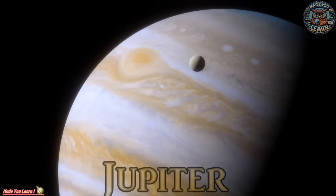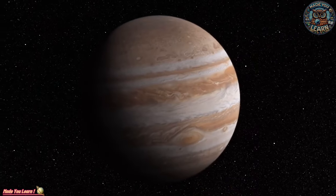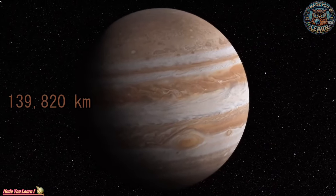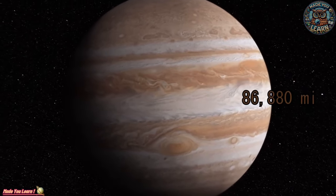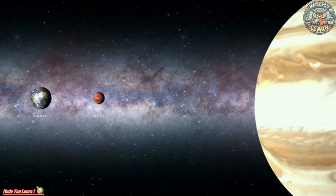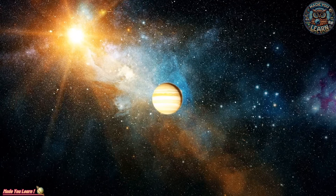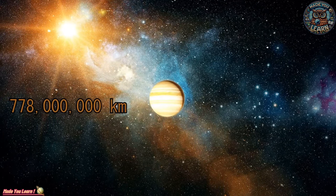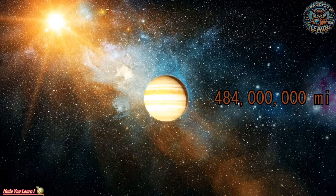Jupiter, the largest planet in our solar system, is a gas giant with a mass more than twice that of all the other planets combined. Its great red spot, a storm larger than Earth, exemplifies the violent weather systems within its thick atmosphere of hydrogen and helium. Jupiter's numerous moons, including the ice-covered Europa and volcanic Io, make it a miniature solar system in its own right.